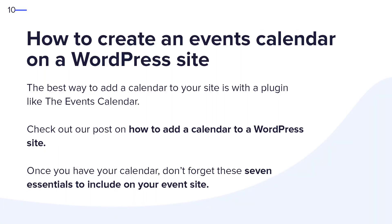Now that you have a better understanding of the different event tools you can utilize, the next step is creating your events calendar. The best way to add a calendar to your site is with a plugin like The Events Calendar. I would suggest checking out our post on how to add a calendar to a WordPress site to learn more — you can find the link below this video. And once you have your calendar, don't forget to read our post on the seven essentials to include on your events site.